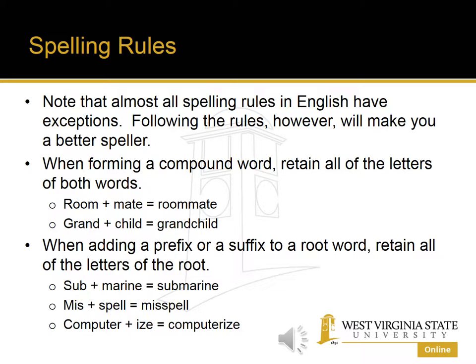First rule: when combining a compound word, retain all the letters of both words. For example, if I'm joining the words room and mate, I have a word called roommate with two M's — I don't delete any letters. Or grandchild — I join them just as they are spelled, without deleting any letters.